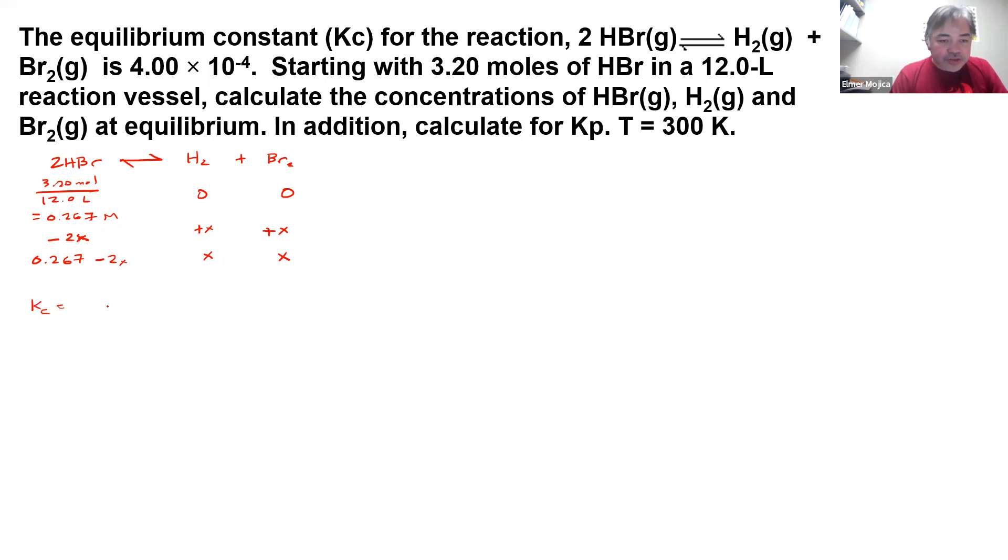Now when we write the expression for this, Kc equals H2 times Br2 over HBr squared. So substituting the values we have: 4.00 times 10^-4, and then we have x times x over (0.267 minus 2x) squared.